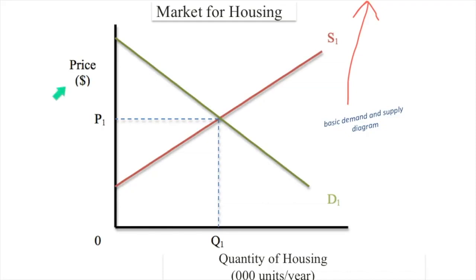All right, so what do we got? We got a diagram for the market for housing. We got the quantity of housing in thousands of units per year. Let's imagine this being for apartments, and the government wants to come in and put a price ceiling — which is a maximum price — on the price of housing. So like all economic situations, you begin with the beginning of the story, and the beginning of the story is this diagram.